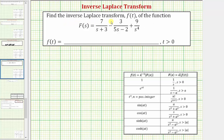We want to find the inverse Laplace transform of F(s), which will give us the function f(t). Because the inverse Laplace transform of F(s) equals f(t), our first step is to take the inverse Laplace transform of both sides of this equation.